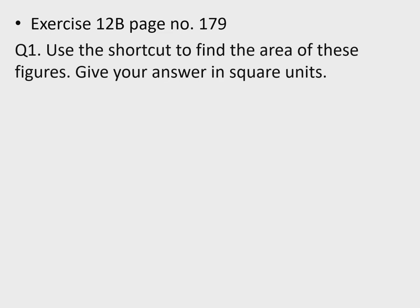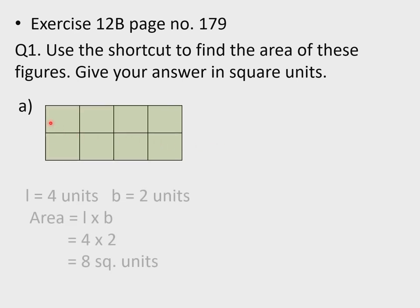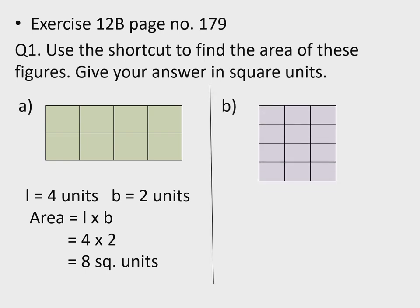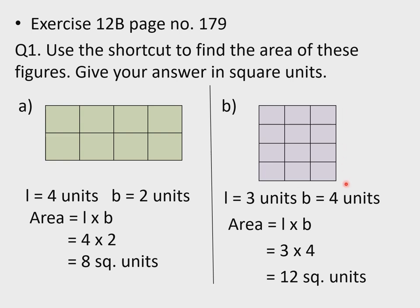Now let's do Exercise 12b, page number 179. Question 1: use the shortcut to find the area of these figures; give your answer in square units. Question a: length = 4 units, breadth = 2 units. Area of rectangle = length × breadth = 4 × 2 = 8 square units. Question b: length = 3 units, breadth = 4 units. Area = 3 × 4 = 12 square units.